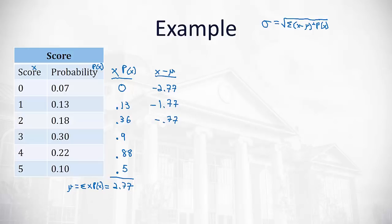3 minus 2.77 is 0.23, 4 minus 2.77 is 1.23, and 5 minus 2.77 is 2.23.